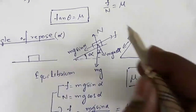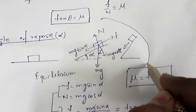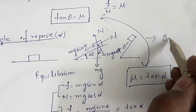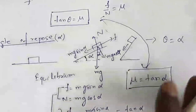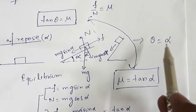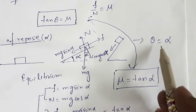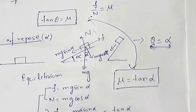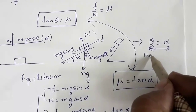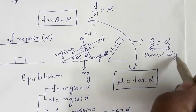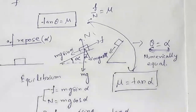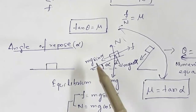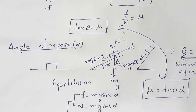From these two results we can conclude that theta equals alpha — meaning the angle of friction is numerically equal to the angle of repose. These are two different concepts and different terms, but they are numerically equal. The angle of repose is the maximum angle of inclination of the incline for which the block remains stationary.